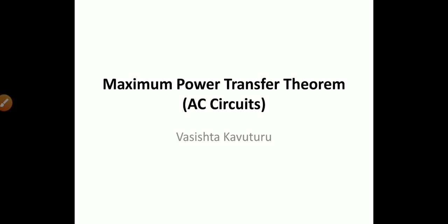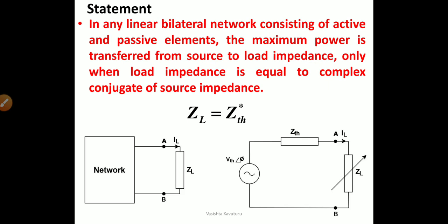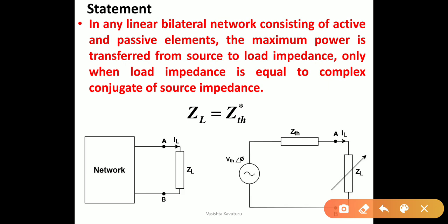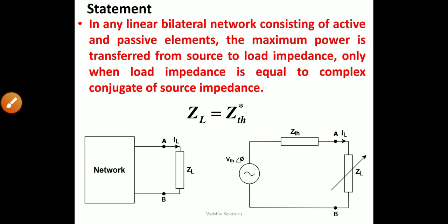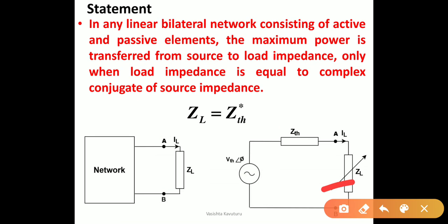Hi everyone, welcome to my channel. In this video we will see the Maximum Power Transfer Theorem for AC circuits. The statement is: in any linear bilateral network consisting of active and passive elements, the maximum power is transferred from source to load impedance only when the load impedance is equal to the complex conjugate of the source impedance. So unlike DC circuits, in AC circuits we have impedances in the circuit.